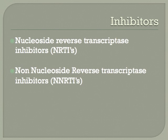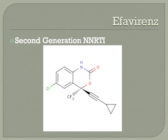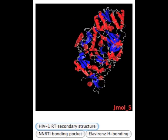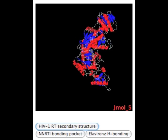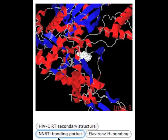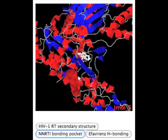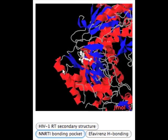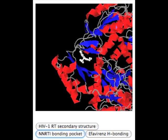There are two types of reverse transcriptase inhibitors: the first are nucleoside RTIs, and the second are non-nucleoside RTIs. Our molecule, efavirenz, falls into the category of non-nucleoside reverse transcriptase inhibitors. Here in this JMol representation is HIV-1 reverse transcriptase. As you can see, the NNRTI binding pocket is located in the palm domain adjacent to the polymerase active site.